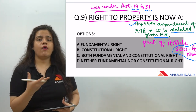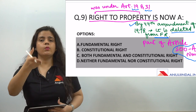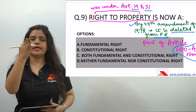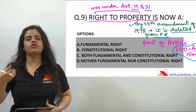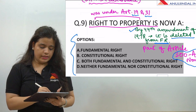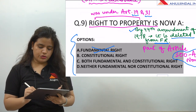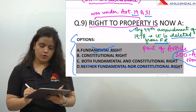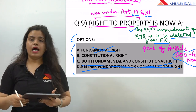So if a question asks about the Right to Property, you have to answer Article 300A for its current status. And if they ask when it was a fundamental right, it was under Article 19 and Article 31. If they ask which amendment changed it, the answer is the 44th Amendment of 1978. The question here is: Right to Property — is it a fundamental right? No, it cannot be. It is a constitutional right. The answer is D — it is a constitutional right, not a fundamental right.